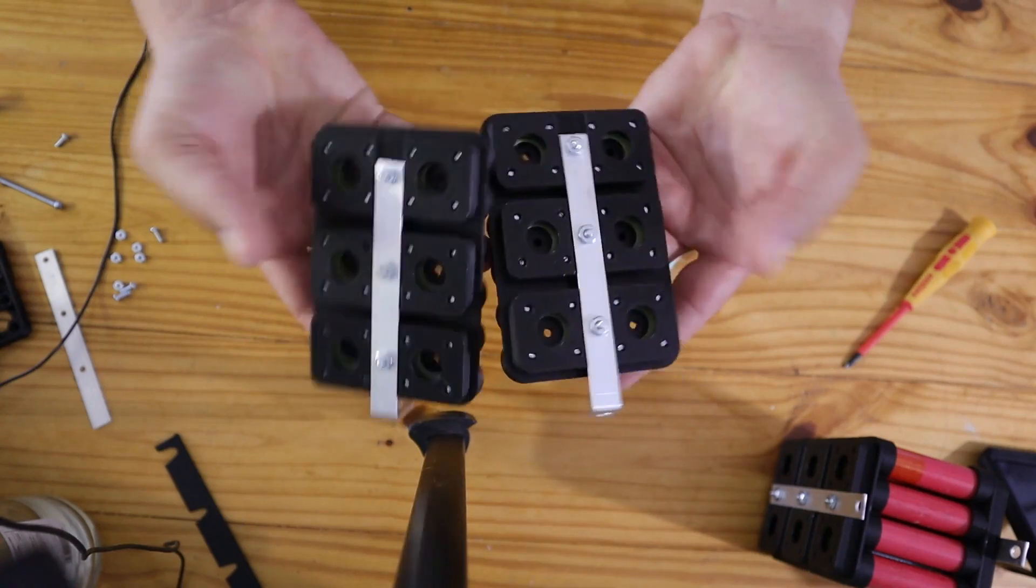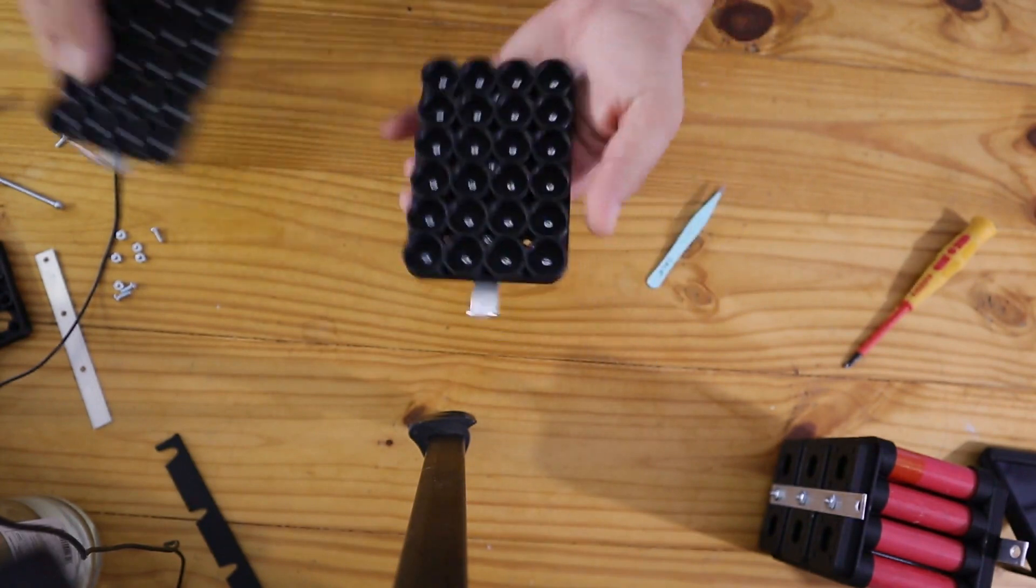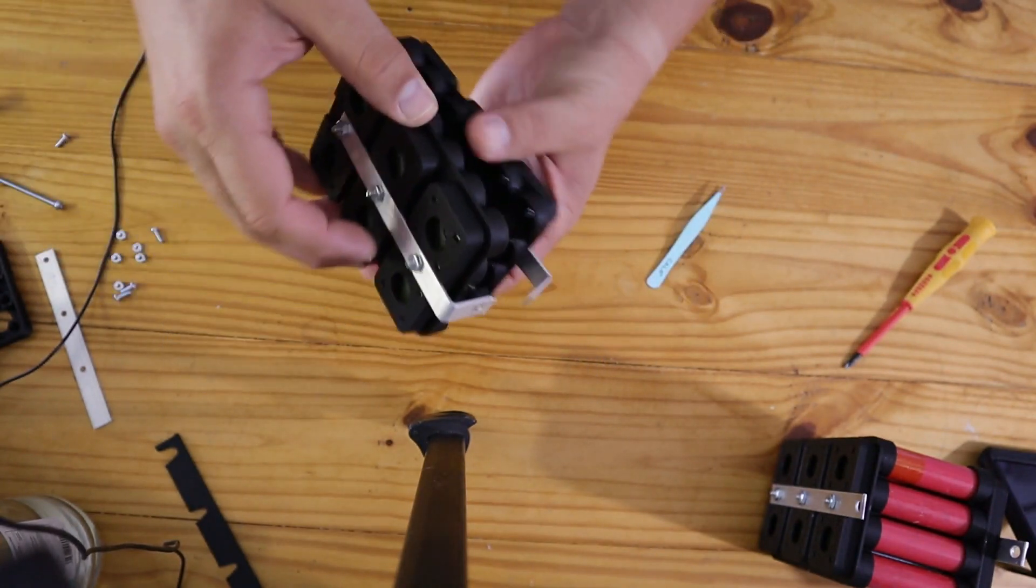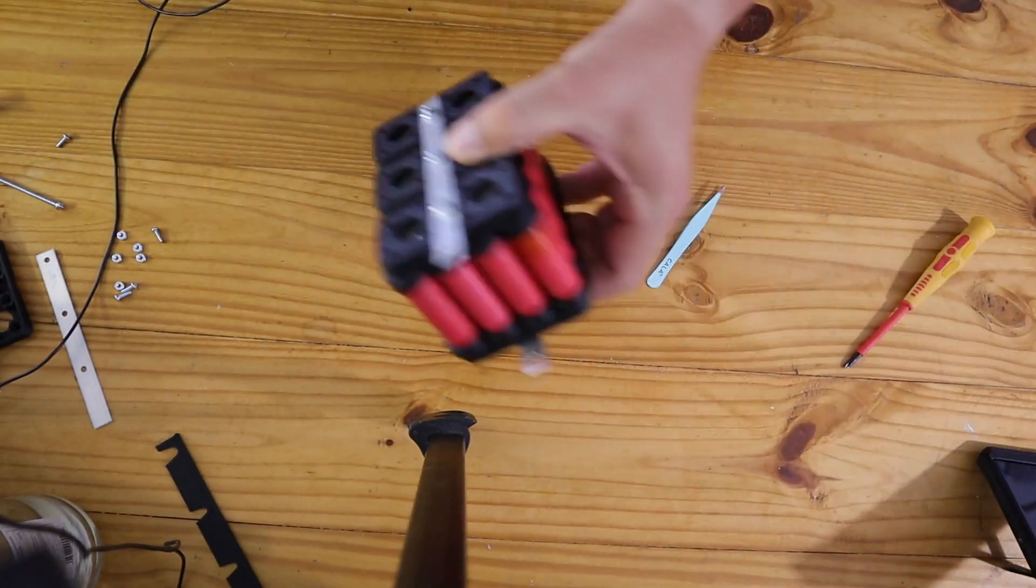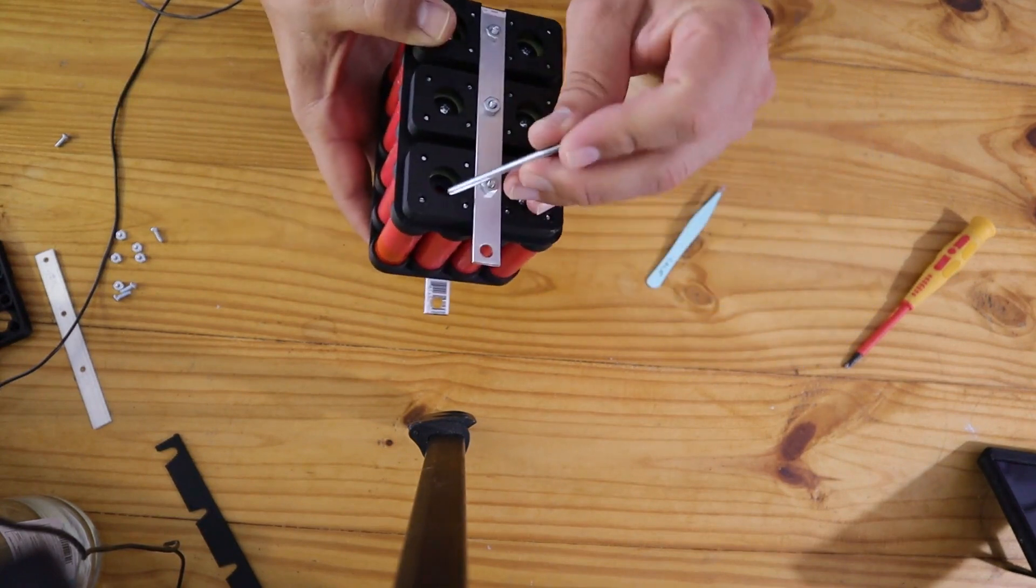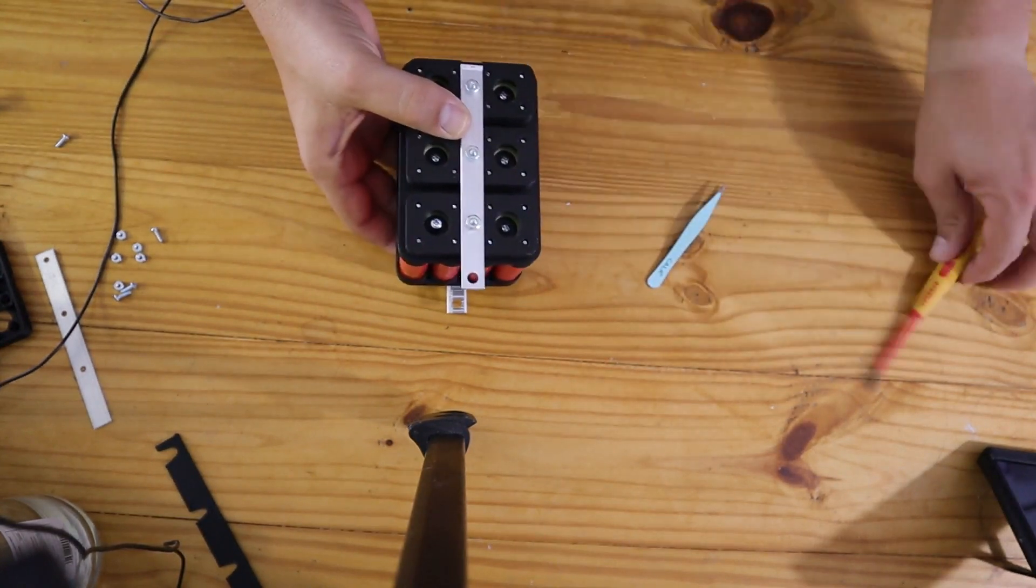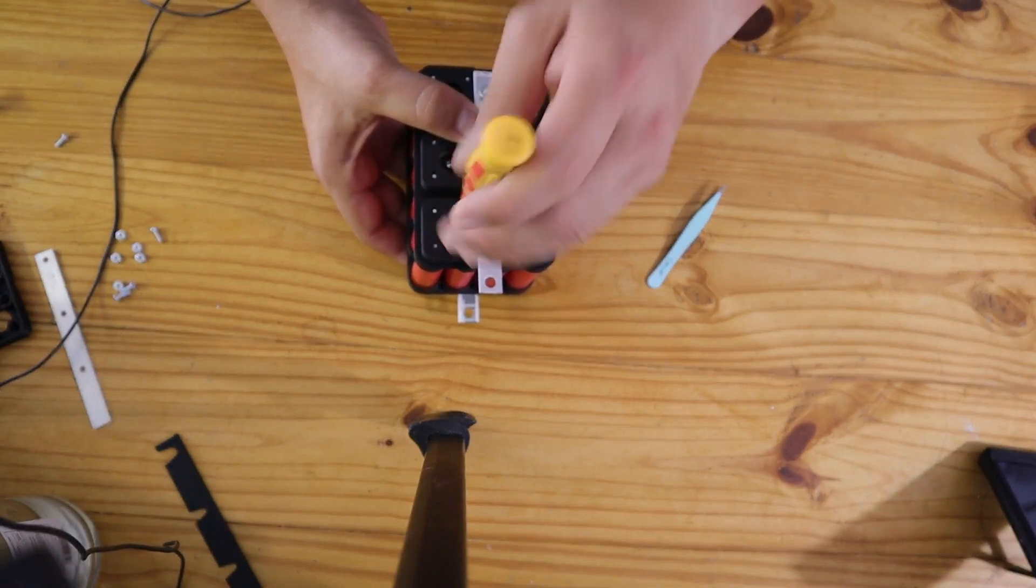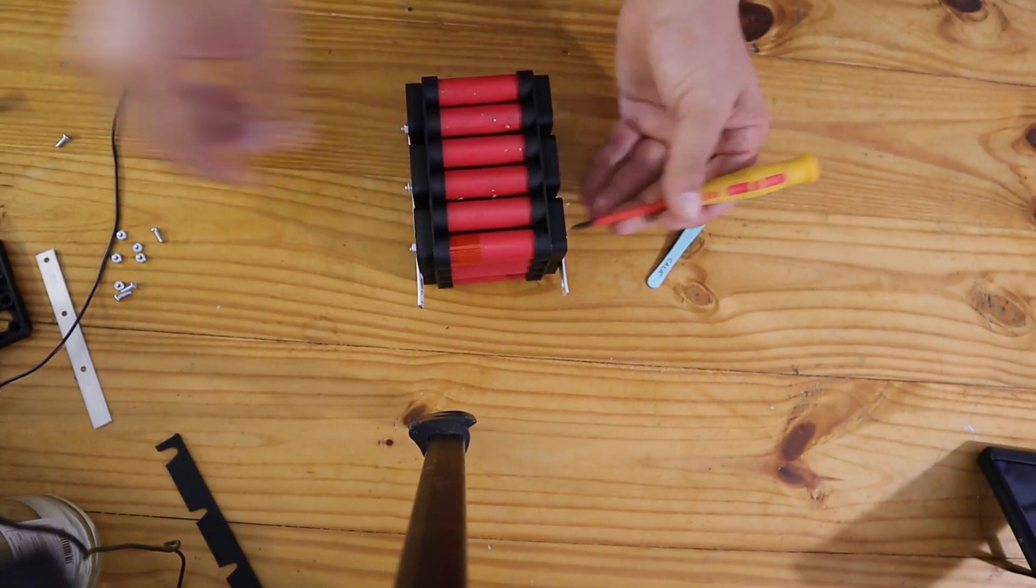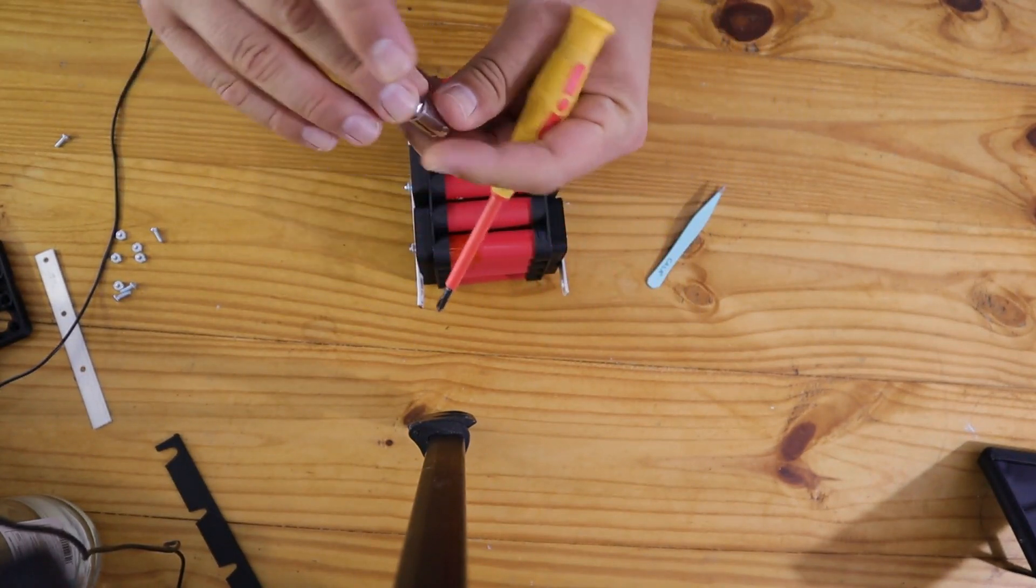Once you have two of them like that, you are going to put your cells on it and basically you just close your cells like this. And the last step is to take a longer screw that comes with the kit, just like that. You take your nut and a cup.